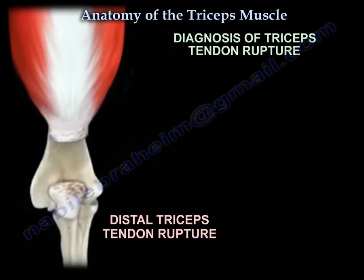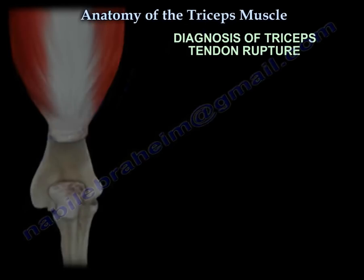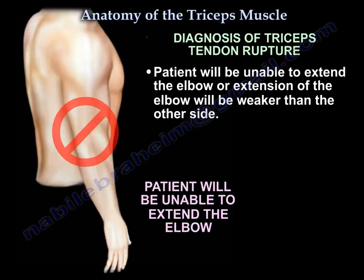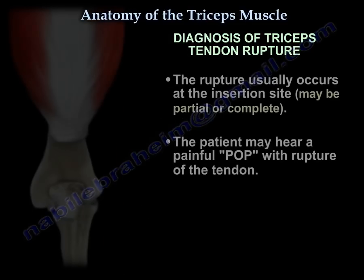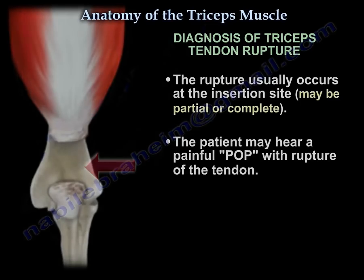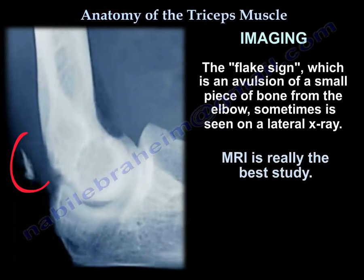Diagnosis of triceps tendon rupture: the patient will be unable to extend the elbow, or extension of the elbow will be weaker than the other side. The rupture usually occurs at the insertion site and can be partial or complete. The patient may hear a painful pop. The flake sign, which is avulsion of a small piece of bone from the elbow, is sometimes seen on a lateral x-ray, but MRI is really the best study.